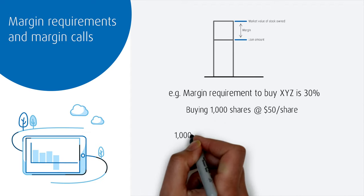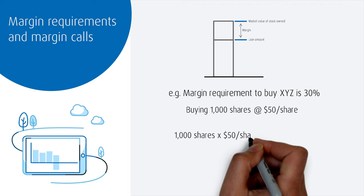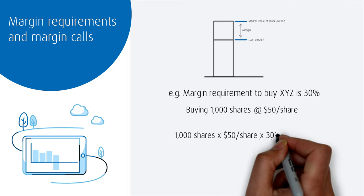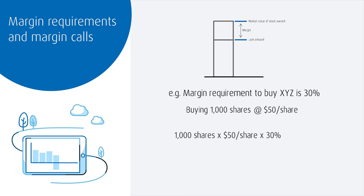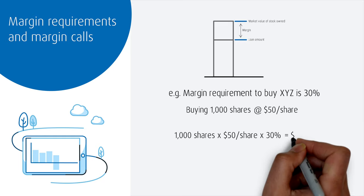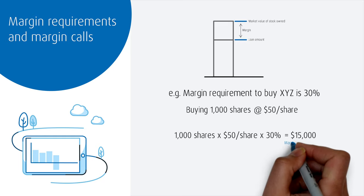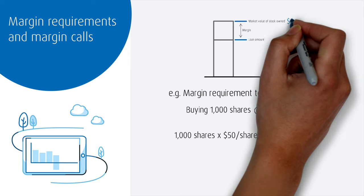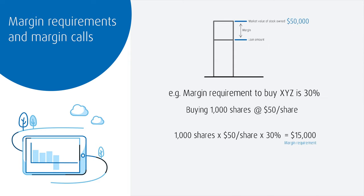You take 1,000 shares and multiply by $50 per share, multiplied by the margin requirement of 30%, which equals $15,000. So while your account will have $50,000 worth of stock XYZ in it, the minimum amount of cash you had to put up for this purchase was $15,000.